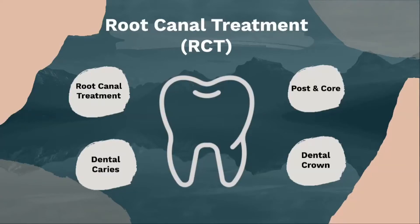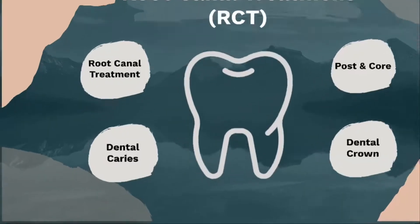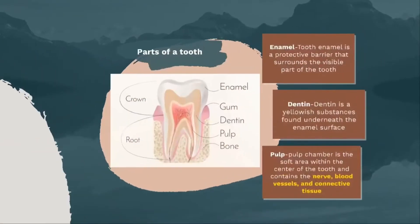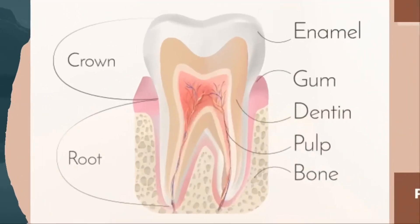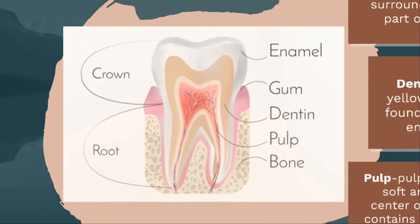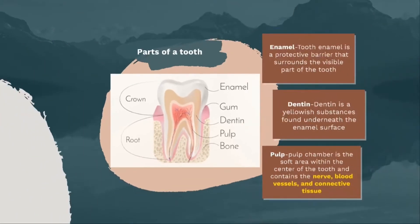Before we dive in deeper, let me start off by explaining the parts of a tooth. The tooth consists of two major parts: the crown and the root. Let's start with the crown. The crown comprises three main parts which are the enamel, dentin and pulp.